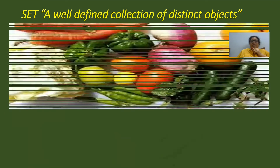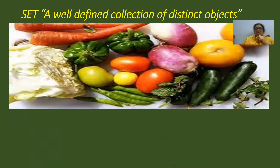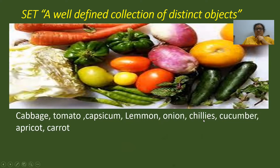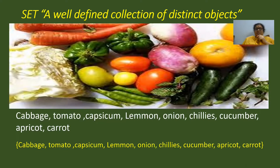These are the vegetables. You all know what are the names of these vegetables. The vegetables you are observing on the screen are cabbage, tomato, capsicum, lemon, onions, chilies, cucumber, apricot, and carrot. There are two onions, but we will write only once. We don't write capsicum, capsicum or onion, onion — we will write each element only once, and representing these in a flower bracket like this is called a set. So a set is nothing but a well-defined collection of objects.